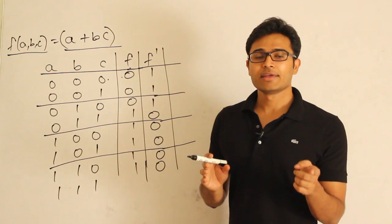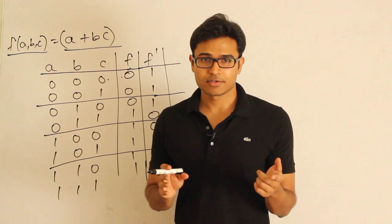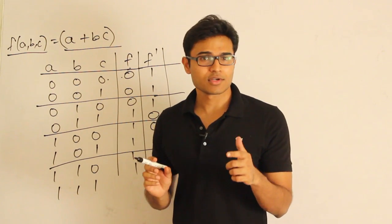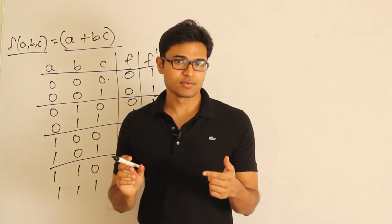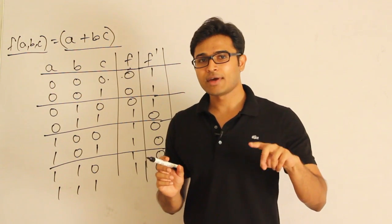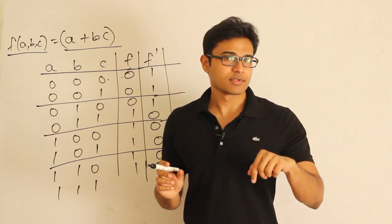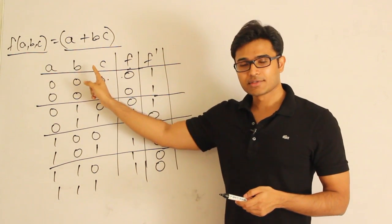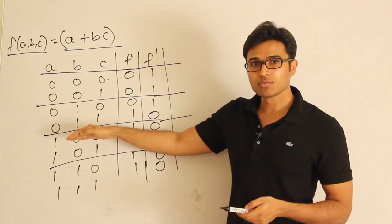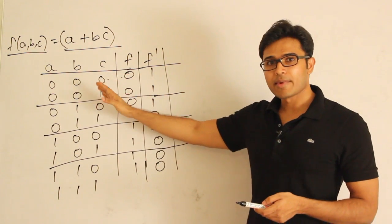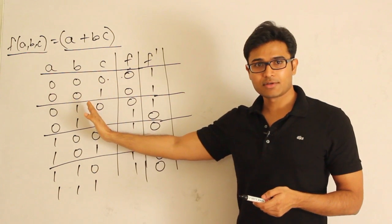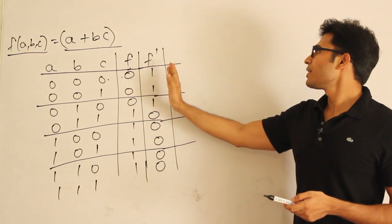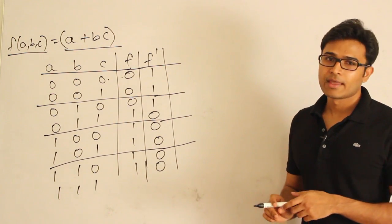A boolean expression is actually defining a function, which means it will take the set of all inputs and map them to output. In this case, output is also boolean. If the function can take two values 0 and 1, and if the variables can take two values 0 and 1, and if there are three variables, then the number of inputs possible is 2 power 3, which is 8. All these eight values will be mapped by a boolean expression to either 0 or 1 - this is nothing but the function.